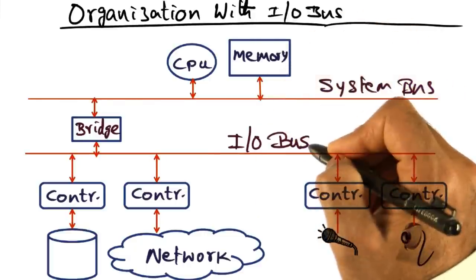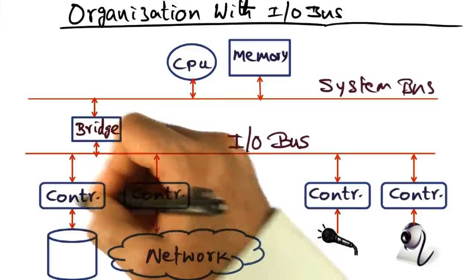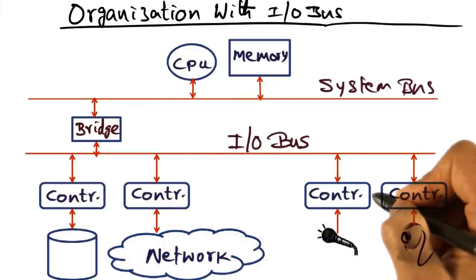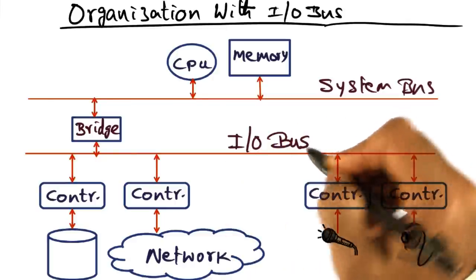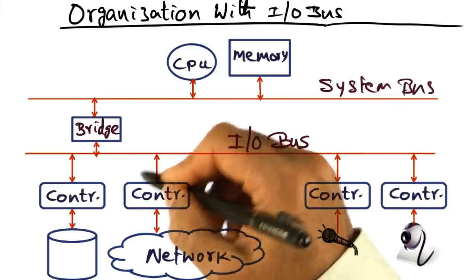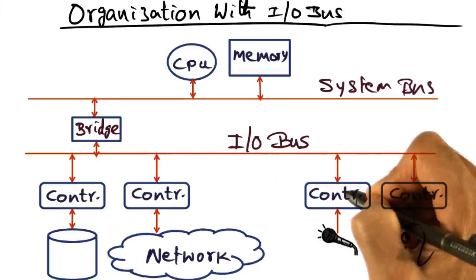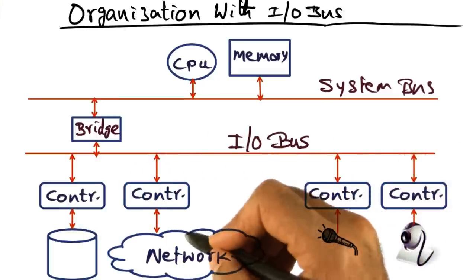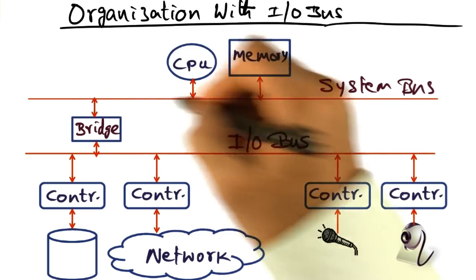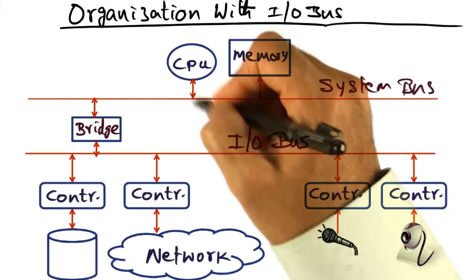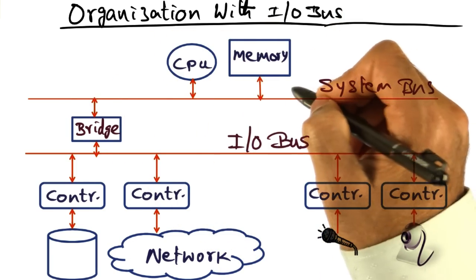The IO bus is primarily intended for the devices to communicate with the CPU. And the intent is that the individual needs of each of these devices in terms of the communication bandwidth that they may need is less than the cumulative bandwidth that may be available for the CPU to communicate with the memory.